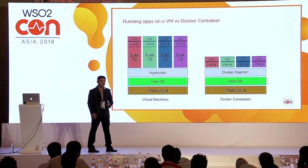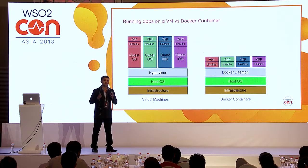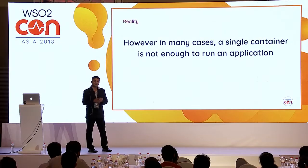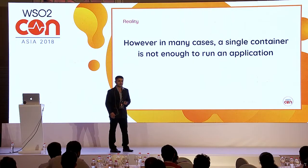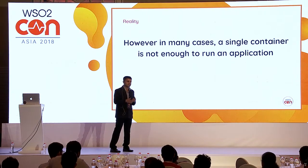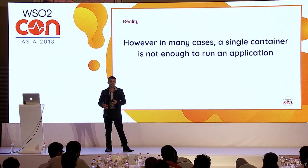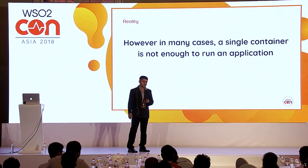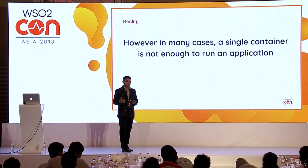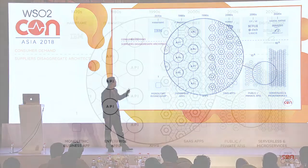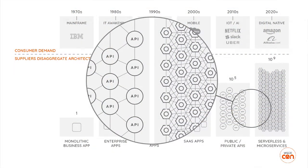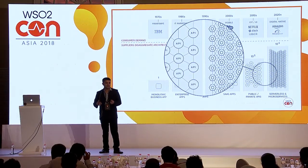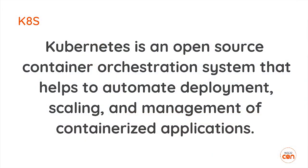Docker containers and virtual machines are not the same — a container is not a trimmed version of a virtual machine; they are two separate concepts. In the container world, best practice is to run a single process in a single container. Running multiple processes in one container means you lose control — if one process consumes excessive resources, it affects the others. With microservice architectures requiring tens or hundreds of services per application, we need some kind of management or orchestration to solve this problem.